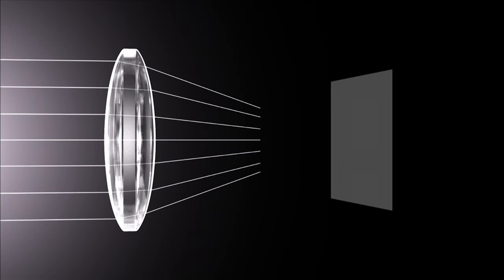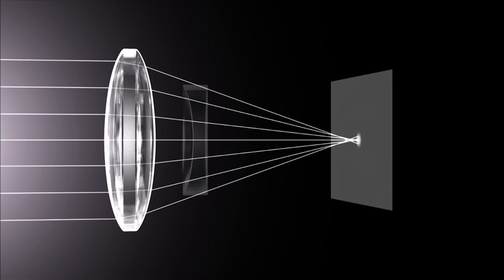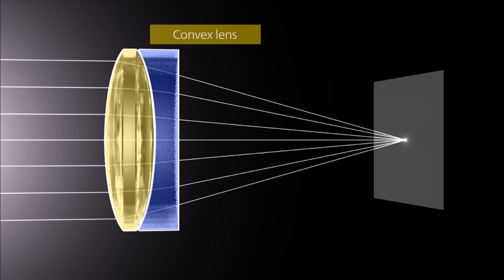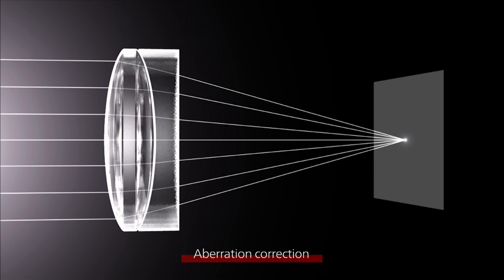Making light converge neatly to a single point requires technology. Since the direction in which spherical aberration occurs in a convex lens is opposite to a concave lens, through a combination of two or more lenses, light rays can be made to converge to a single point. This is called aberration correction.